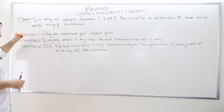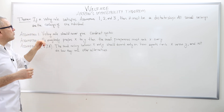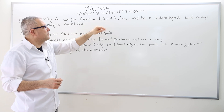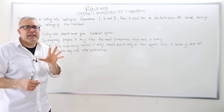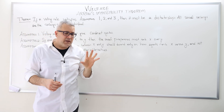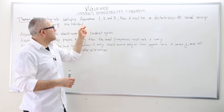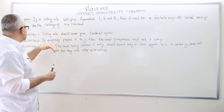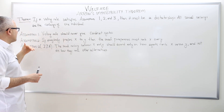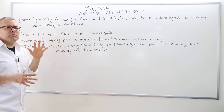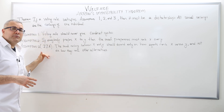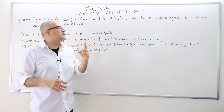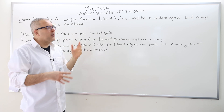Here's how the theorem reads. If a voting rule satisfies three assumptions — which I'll discuss next — then the rule must be a dictatorship. That means there's only one rule which satisfies these three assumptions. Condorcet does not satisfy assumption one, and Borda does not satisfy assumption three. Any other rule you can think of will violate either assumption one, two, or three. At the end, there is only one rule that satisfies all three, which is dictatorship.